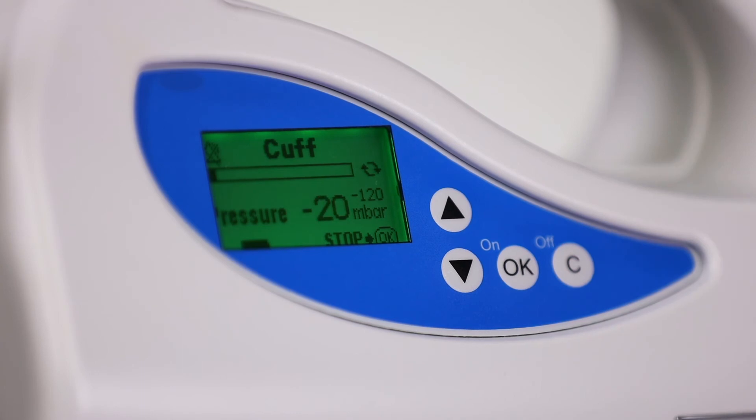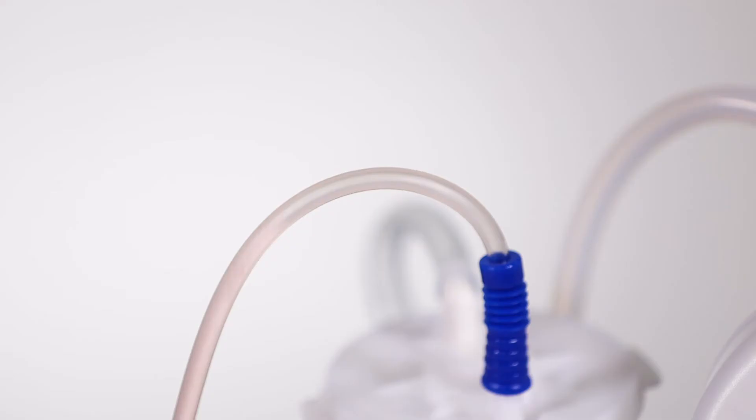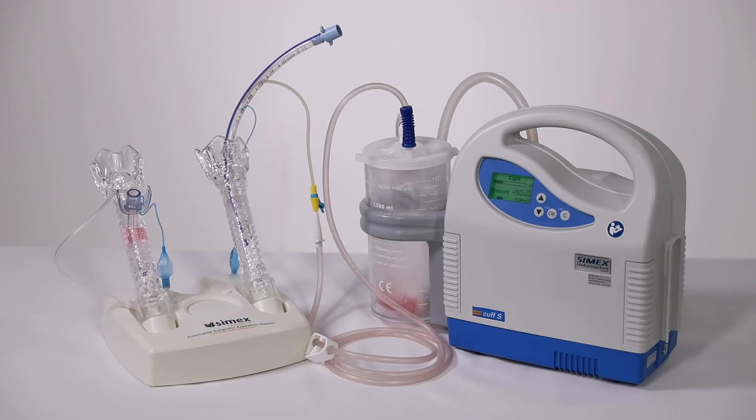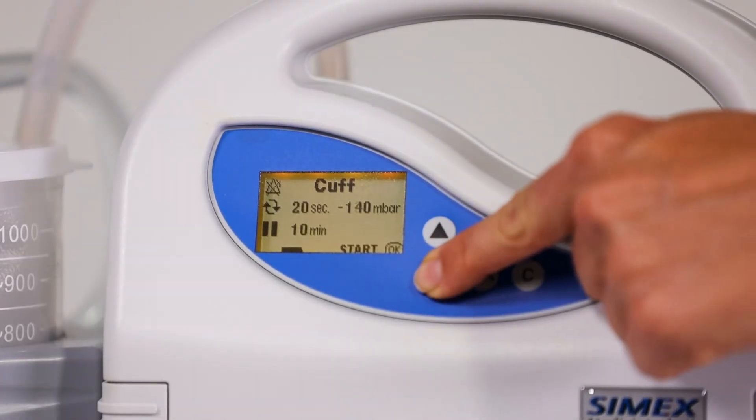Press OK to start the pump. You will notice the tracheal secretion being removed. If adjustments need to be made to the parameters, repeat the previous steps. If adjusting pressure only, you can pause the pump and adjust.